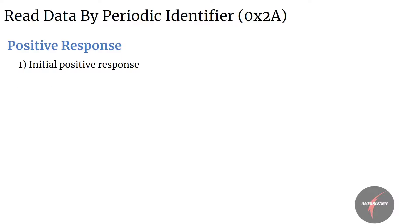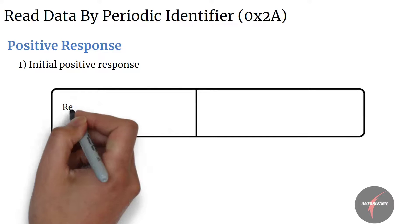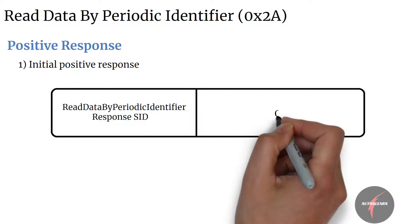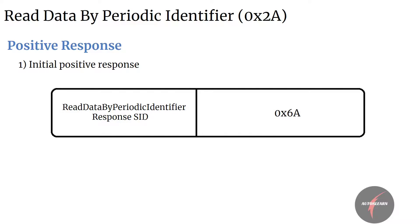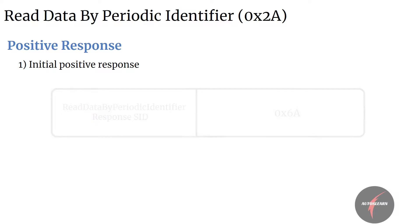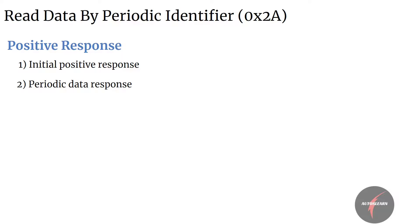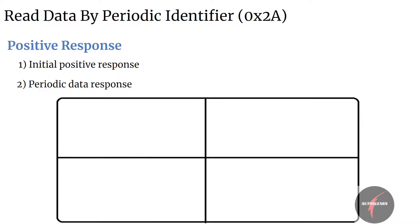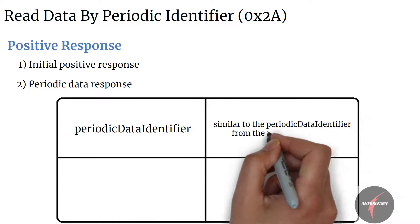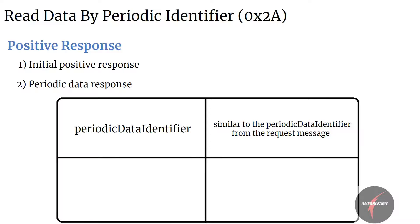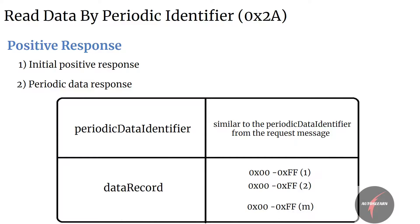The initial positive response format shall contain the Read Data by Periodic Identifier response SID, which is value 0x6A, indicating acceptance of the request. The periodic data response message shall contain first the periodic data identifier — similar to the one sent in the request — followed by the data record parameter, which contains the data record requested by the client periodically. The content of the data record is vehicle manufacturer specific.